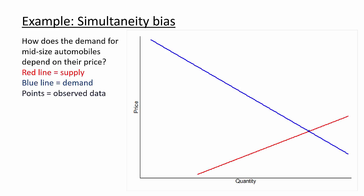To understand the intuition behind instrumental variables, let's apply it to a situation of simultaneity bias. Suppose we'd like to estimate how the demand for midsize sedans depends on their price. We know that simultaneity bias is a concern here because the prices and quantities that we observe are determined by both the supply and demand. Of course, we do not see the actual supply and demand curves, only the equilibrium point at the intersection of the two.